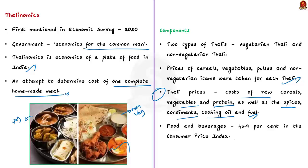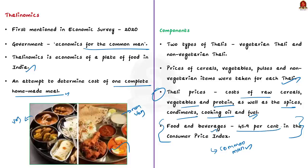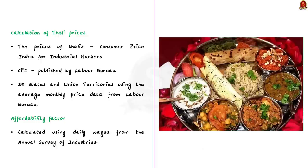Now, why is thalinomics important? Thalinomics is important because the price of a plate of food has the most direct effect on the common man. Through thalinomics, we can understand whether the common man in our country is able to afford a completely cooked Indian thali. Thalinomics tells us that food and beverages constitute 45.9% in the consumer price index. This is the importance of thalinomics.